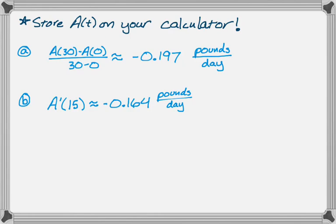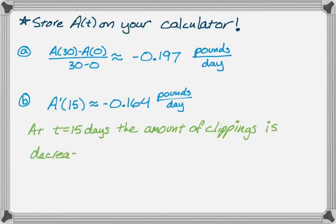I need to interpret this. At t equals 15 days, the amount of clippings in the bin is decreasing since the rate of change is negative, at a rate of negative 0.164 pounds per day. So you'll have fewer clippings in the bin.